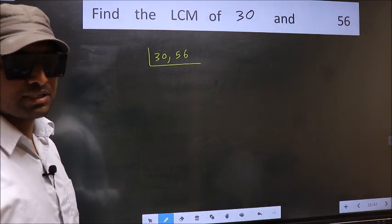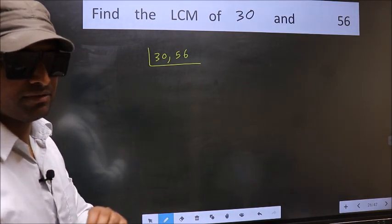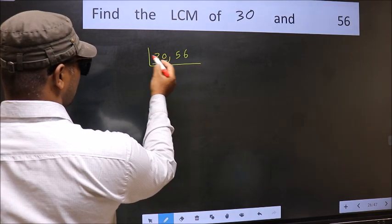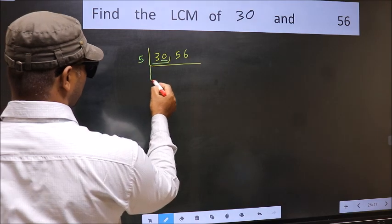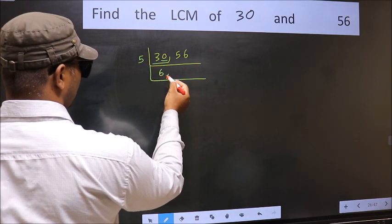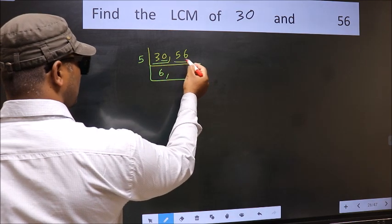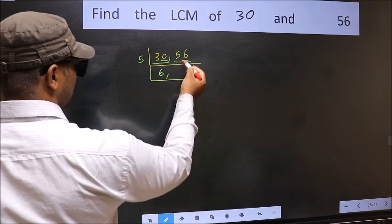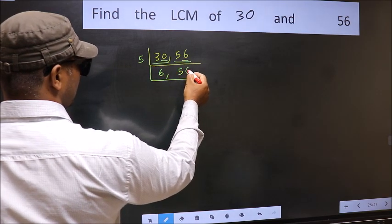Now you should focus on the first number which is 30 here. For this number, last digit 0. So directly take 5. When do we get 30 in 5 table? 5, 6, 30. The other number 56, last digit neither 0 nor 5. So this is not divisible by 5. So we write it down as it is.